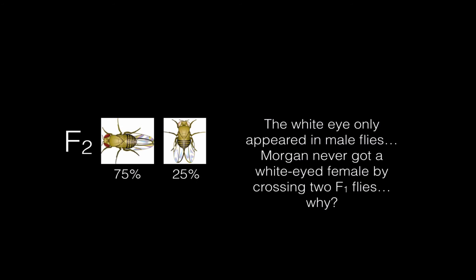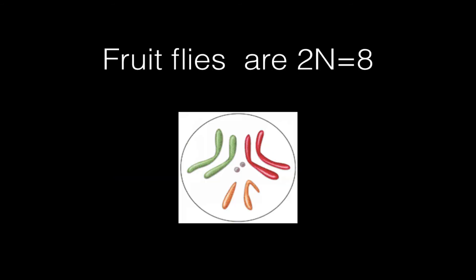So what Morgan discovered is that the white-eye mutation only appears in male flies. He never got a white-eyed female by crossing the two F1s we just crossed. And the big question, of course, is why? Well, to understand this, we have to look a little bit at the karyotype of a fruit fly. Now, fruit flies have eight chromosomes. So you can say their diploid number is 2n equals eight. So that means they have four pairs of chromosomes. They have two big pairs. There's one pair here in green. Here's another pair here in red. One little tiny pair, and then this weird unmatched pair here, which are the sex chromosomes.